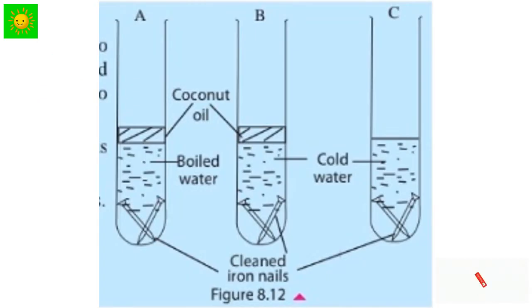Take some water into a test tube and heat to boil it. Put a clean iron nail into it and cover the water surface with a layer of oil. In setup A, the oil layer is placed to prevent the dissolving of air when water cools.